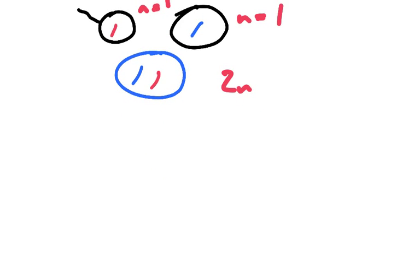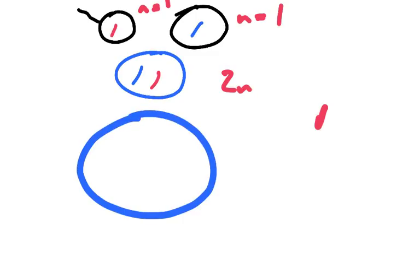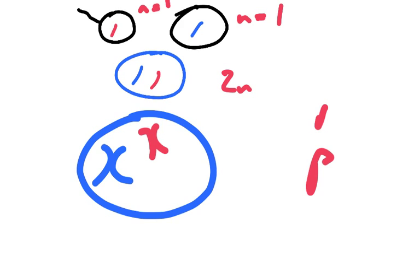The next phase is they replicate, which is interphase. What we see then is this — because they've replicated, condensed, and then they appear in prophase. Prophase is where they appear. Now in prophase something else happens — the chromosomes are spindly little things, which are pretty delicate.